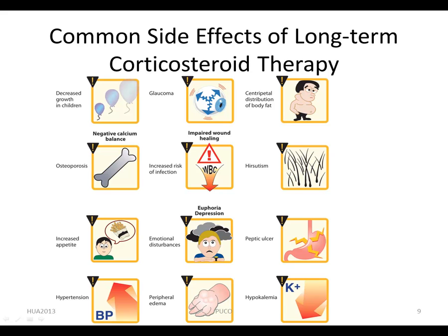Classic Cushing syndrome features — redistribution of body fat, puffy face, increased body hair growth, acne, insomnia, and increased appetite — are observed when excess corticosteroids are present. Increased frequency of infections also occurs with long-term corticosteroid therapy. Hyperglycemia may develop and lead to diabetes mellitus; diabetic patients should monitor their blood glucose and adjust medication accordingly. Hypokalemia caused by corticosteroid therapy can be counteracted by potassium supplementation.